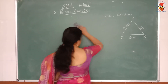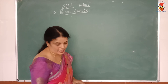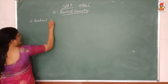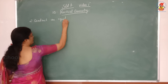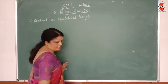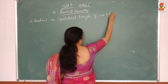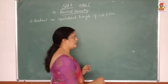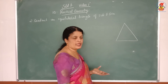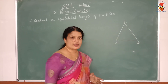Next, Exercise 10.2 Question 2: Construct an equilateral triangle of side 5.5 cm. First, draw a rough figure. You can name the vertices A, B, C. In an equilateral triangle, all sides are equal and all angles are equal, so AB = BC = AC = 5.5 cm.